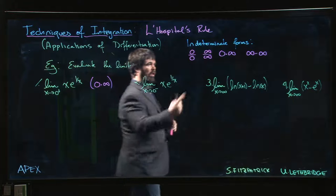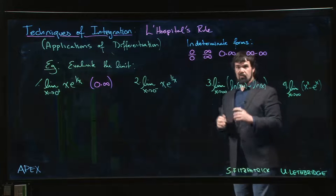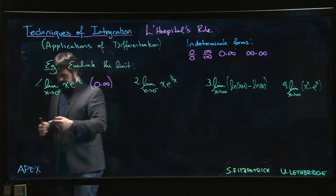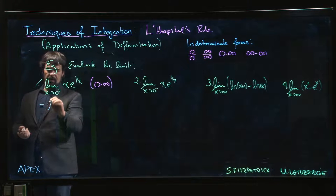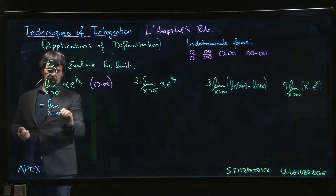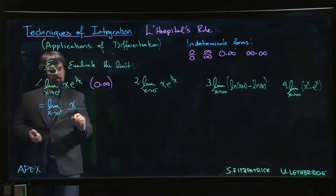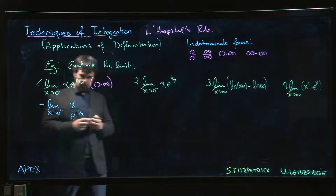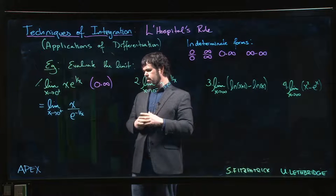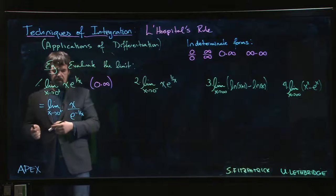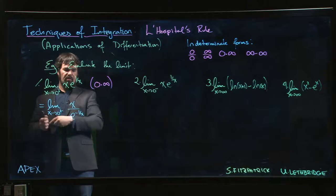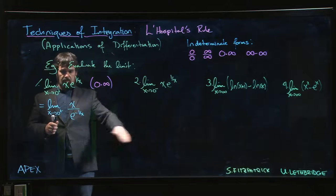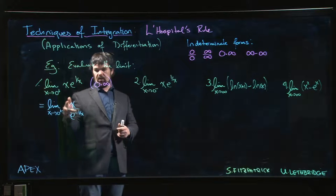The trick with limits in forms other than 0 over 0 or infinity over infinity is to manipulate them into a form where L'Hôpital's rule applies. There's a simple trick: we can write this as the limit as x goes to 0 from the right of x divided by e to the minus 1 over x. We can also try e to the 1 over x divided by 1 over x. Let's try the first way — with x approaching 0, e to the minus 1 over x goes to 0 as well, so this is now a 0 over 0 limit.